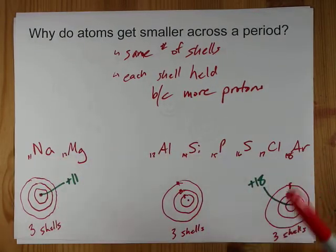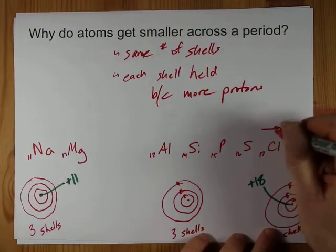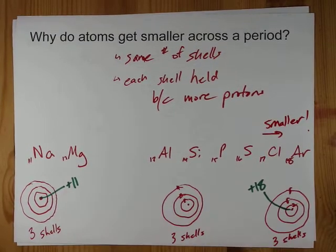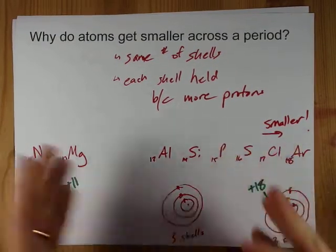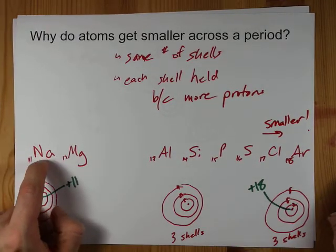the farther right you go on the periodic table, the atoms actually get smaller. How's that for fun? By the time you create ions of these things, it changes the game. When you make a positive ion out of sodium,